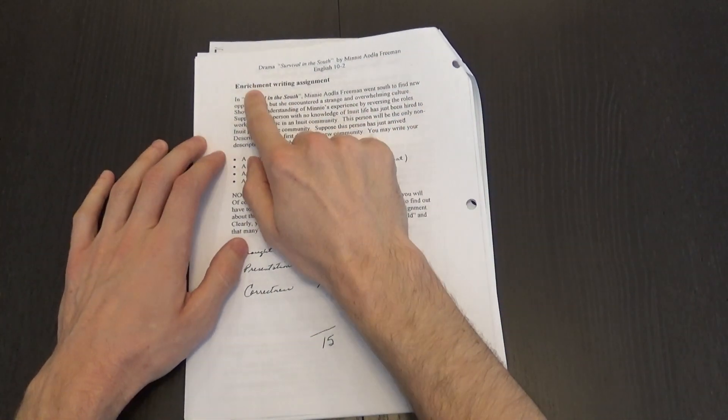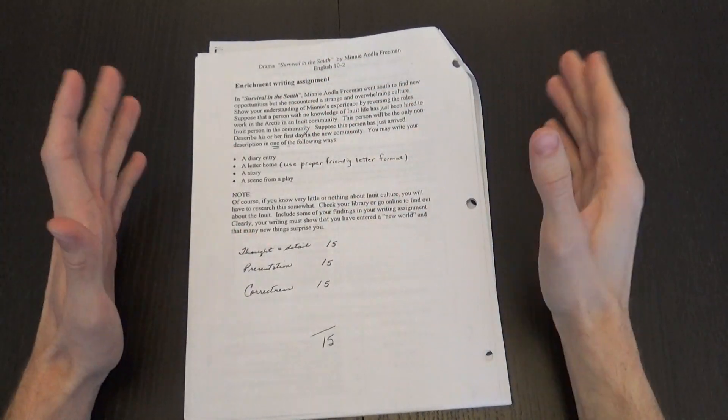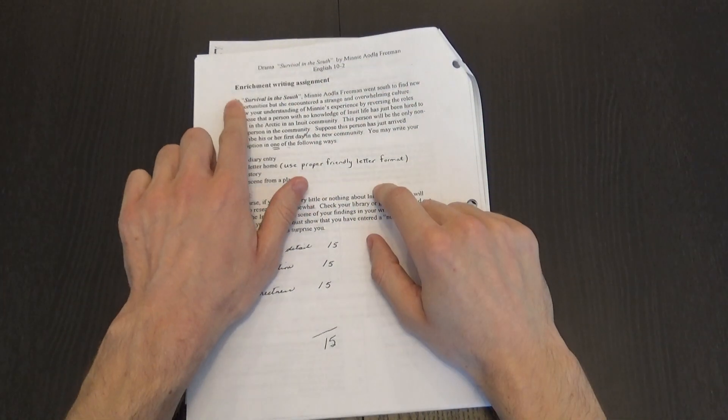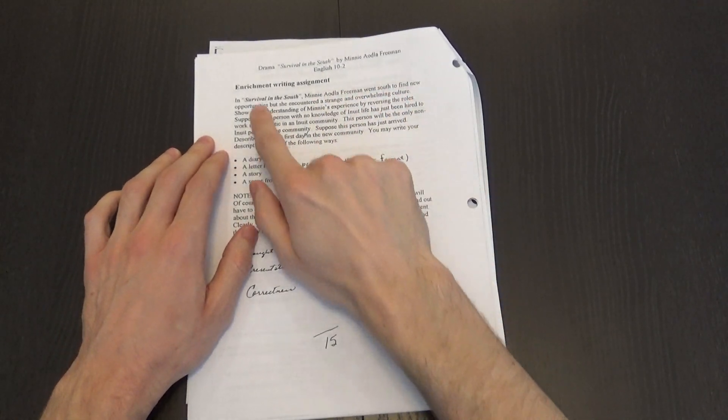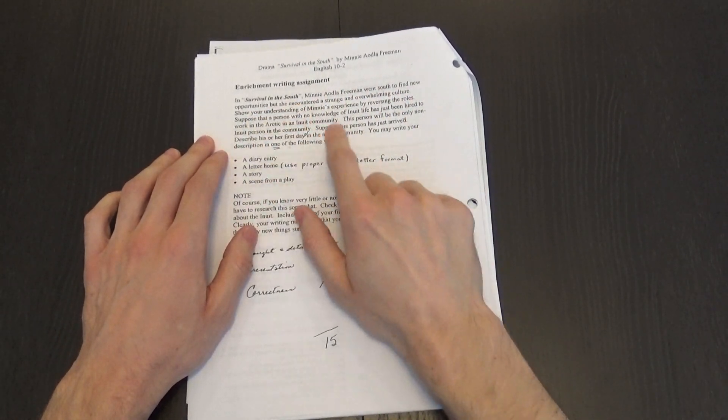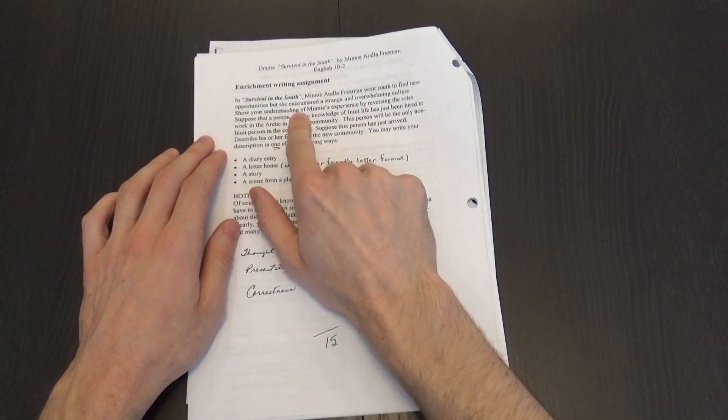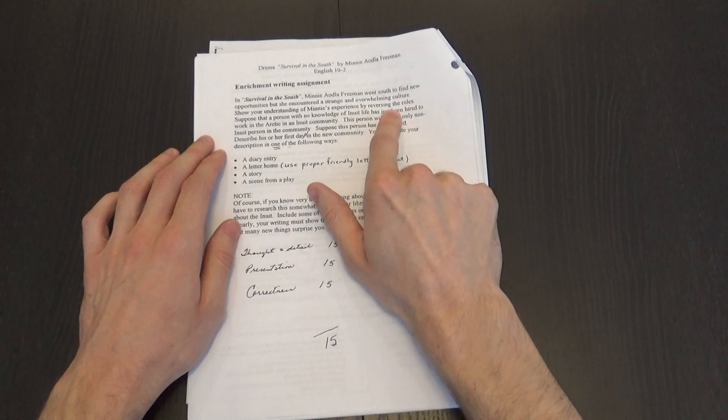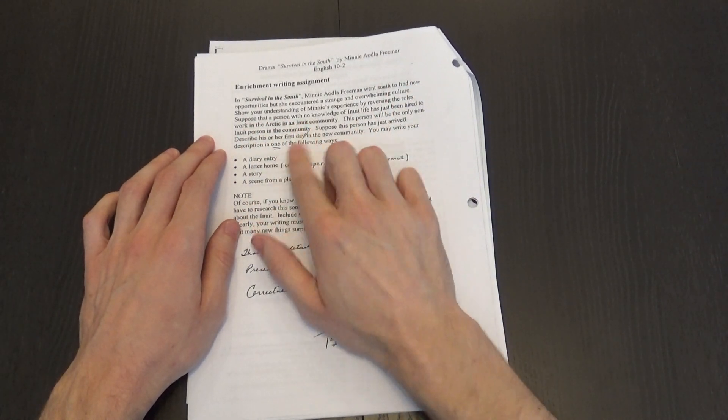For your assignment, for the enrichment writing assignment on Survival in the South, here's what you're going to have to do. So in Survival in the South, Minnie Odla Freeman went south to find new opportunities but she encountered a strange and overwhelming culture. Show your understanding of Minnie's experience by reversing the roles. Suppose that a person with no knowledge